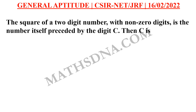Now, moving on to the question. The question is: the square of a 2-digit number with non-zero digits is the number itself preceded by the digit C. Then C is — the options are A) 1, B) 2, C) 4, and D) 6.